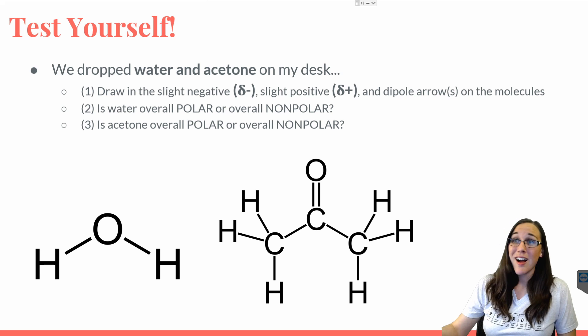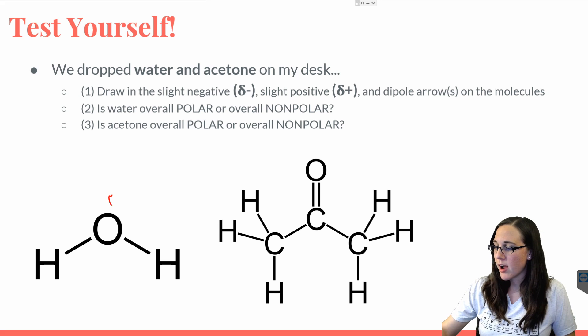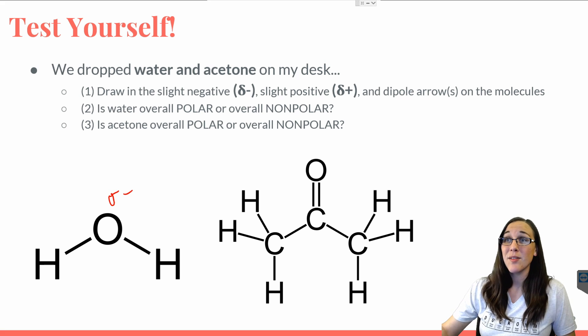With water, we know that oxygen is the more electronegative atom between oxygen and hydrogen. So we're going to draw a slightly negative above oxygen and slightly positive regions by hydrogens.